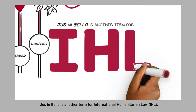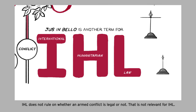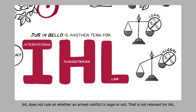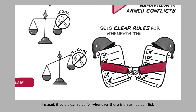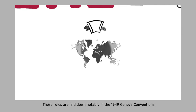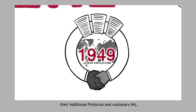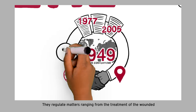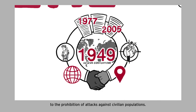Jus in bello is another term for international humanitarian law, IHL. IHL does not rule on whether an armed conflict is legal or not — that is not relevant for IHL. Instead, it sets clear rules for whenever there is an armed conflict. These rules are laid down notably in the 1949 Geneva Conventions, their additional protocols, and customary IHL for international and non-international armed conflicts. They regulate matters ranging from the treatment of the wounded to the prohibition of attacks against civilian populations.